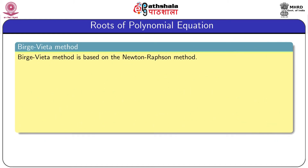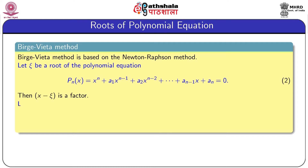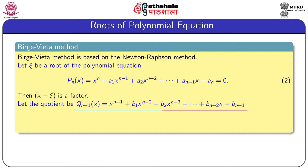We now describe the Birge-Vieta method to find all roots of a polynomial equation. This method is based on the Newton-Raphson method described in module 1 of this chapter. Let ψ be a root of the polynomial equation; then (x − ψ) is a factor. When the polynomial P_n(x) is divided by the factor (x − ψ), we obtain a quotient polynomial of degree n − 1, denoted q_(n-1)(x) = x^(n-1) + b_1·x^(n-2) + ... + b_(n-1), plus a remainder R.